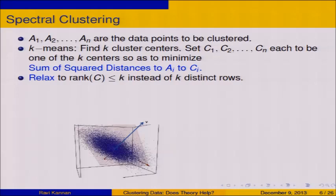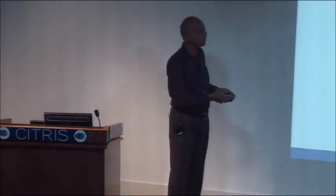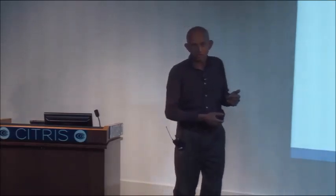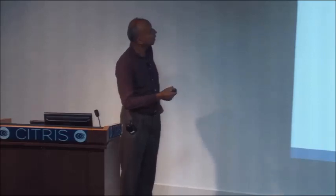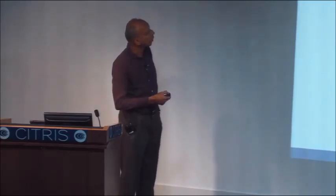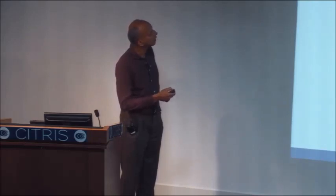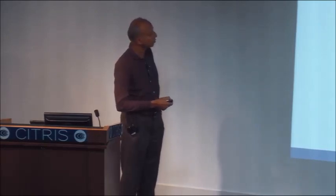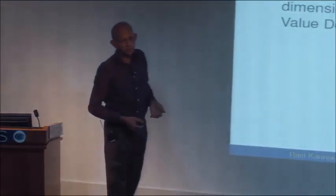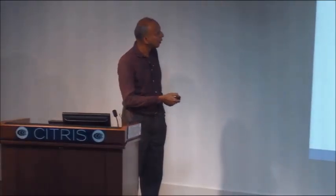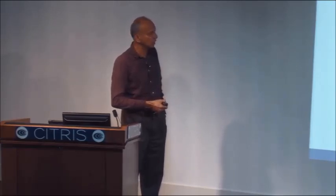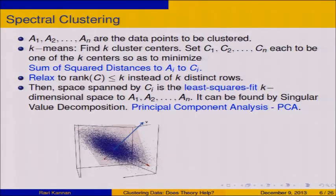If you know your linear algebra, this relaxation immediately gives us an efficient algorithm. This is just singular value decomposition, or principal component analysis. I want a rank-K matrix so that the sum of squared distances is minimized — that's the least squares fit K-dimensional subspace. I take the sum of squared distances and take the minimum. You take the perpendicular distances of the space, and that can be found by singular value decomposition — that's principal component analysis. Here is a bunch of points in 3D, and K is 2, so I want to find the best two-dimensional fit.